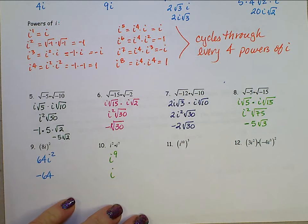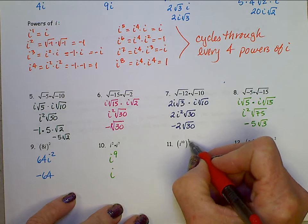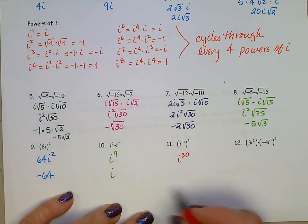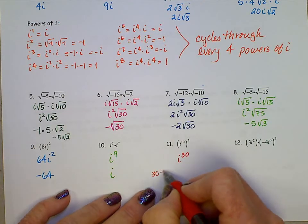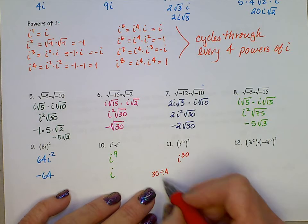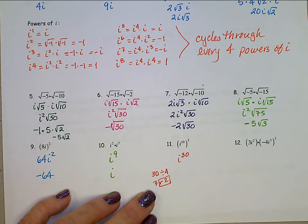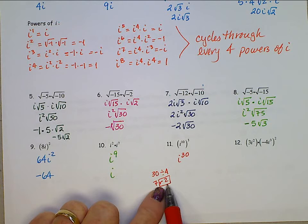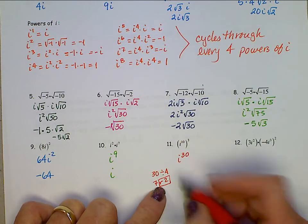For (i to the tenth) to the third: raising powers to a power, we multiply the exponents, giving us i to the 30th. We figure out how many times we cycle through the pattern: 30 divided by 4 is 7 with a remainder of 2. The remainder is the important part — the number of times cycling through doesn't matter. A remainder of 2 gets us to position 2 in the cycle, which is negative 1.